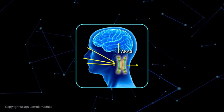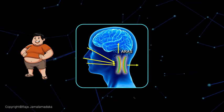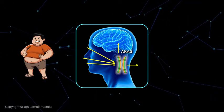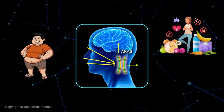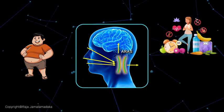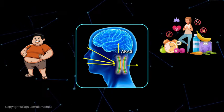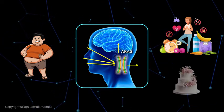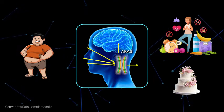If you are focused, for example, on losing weight, the ARAS keeps filtering in information on weight loss techniques, products, and other people that successfully lost weight while selectively filtering out signals of food choices that can raise your weight.